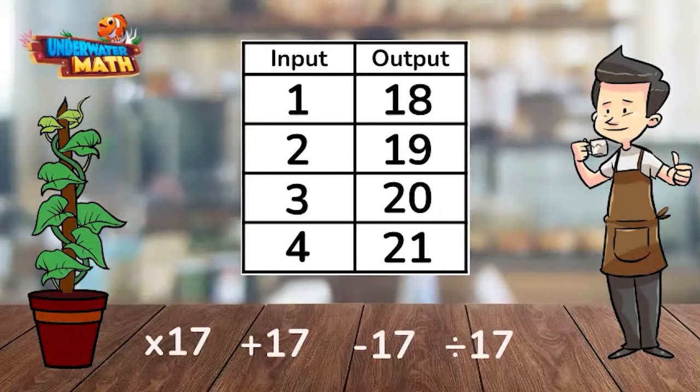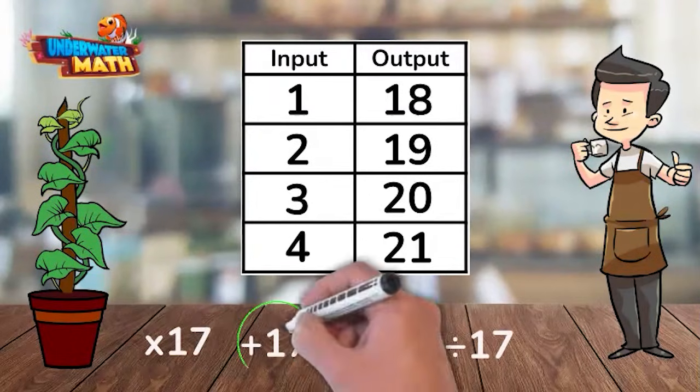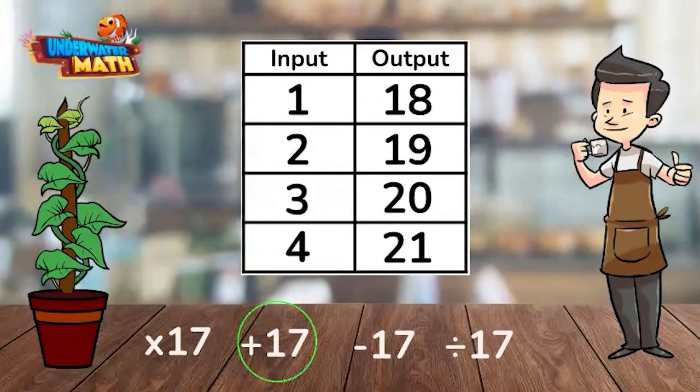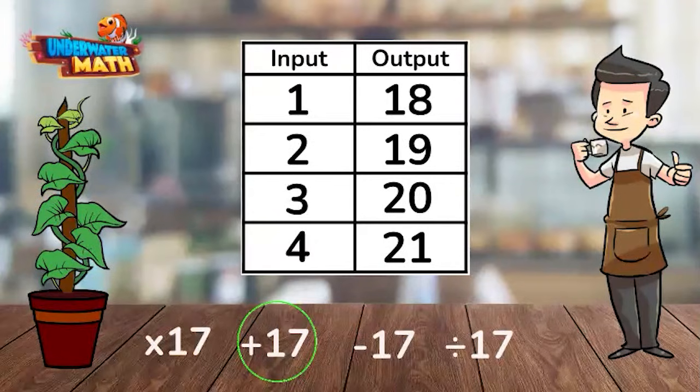Let's try the next one. Is 1 plus 17 equal to 18? Yes. Let's double check with the next input. Is 2 plus 17 equal to 19? Yes. 3 plus 17 is equal to 20 and 4 plus 17 is equal to 21. We have identified the rule.